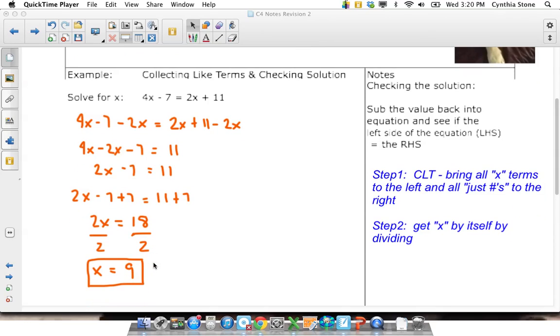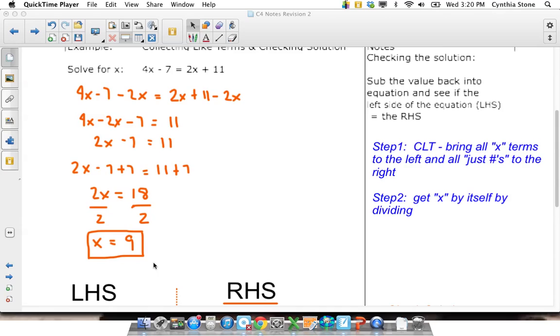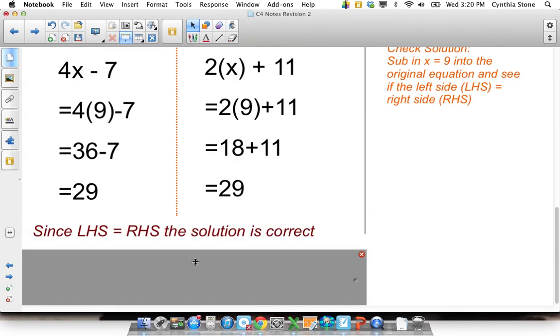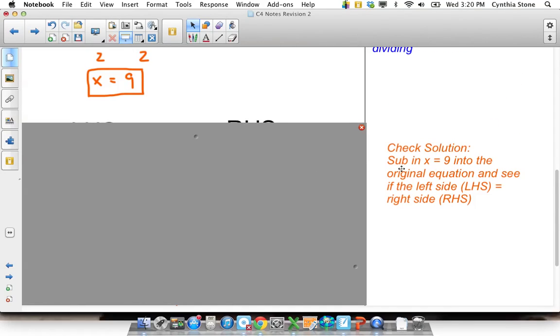So that's my solution. This next step comes up frequently throughout your high school career - checking your solution. The idea with checking is you take our solution, x equals 9, and take your original equation, the left hand side and the right hand side. On the left hand side you'd sub in x equals 9 and see what you get. Do the same thing on the right hand side. If they both work out to the same number, then you know your solution is correct.